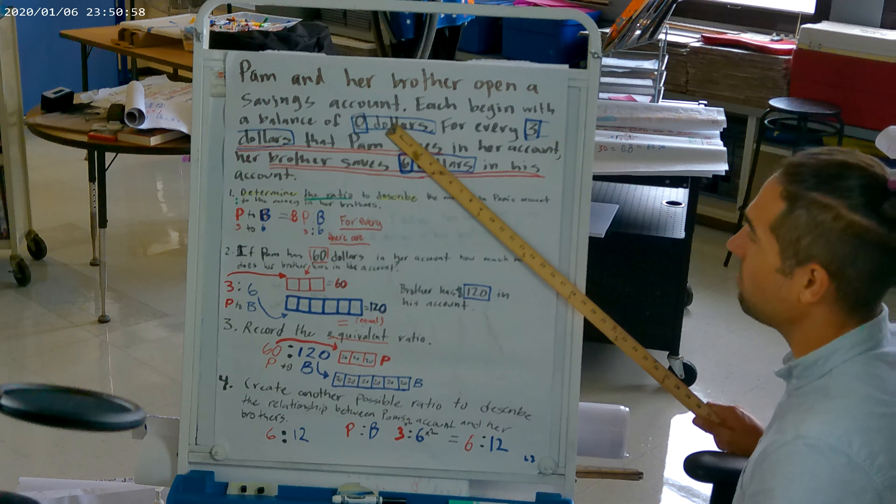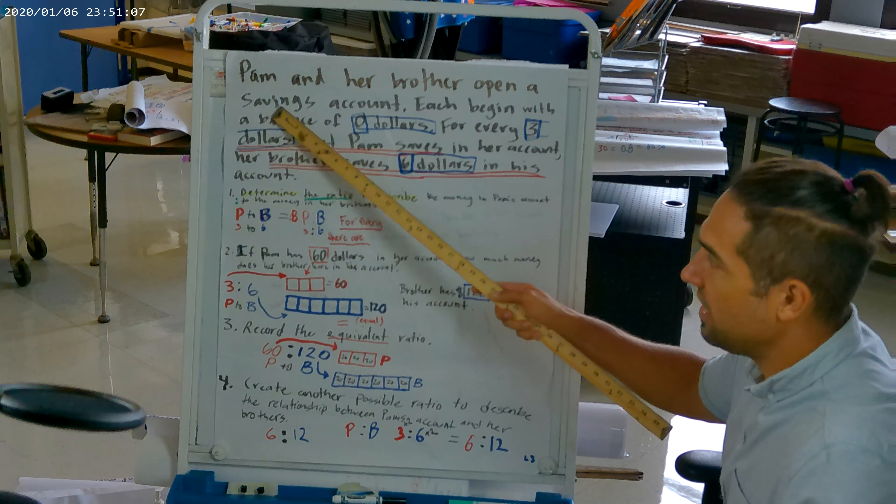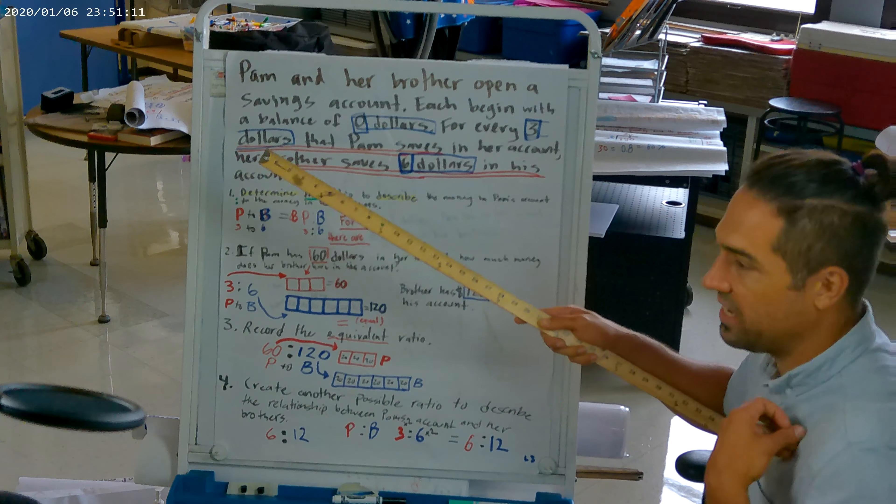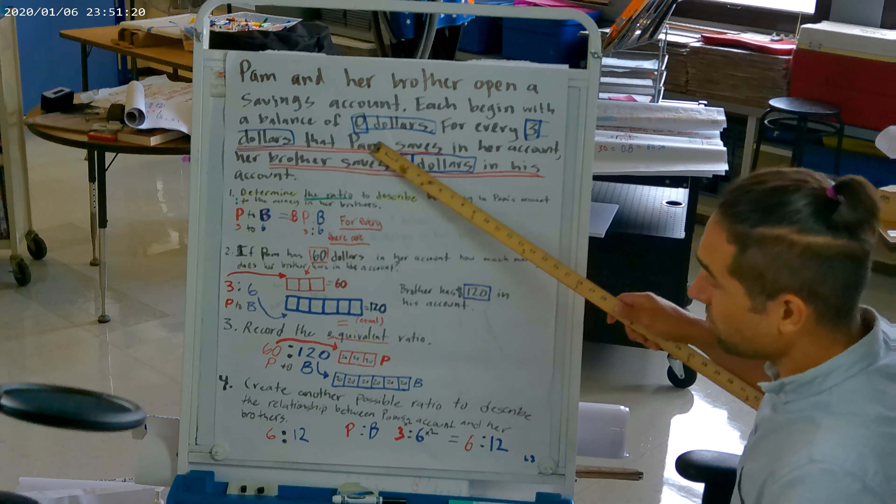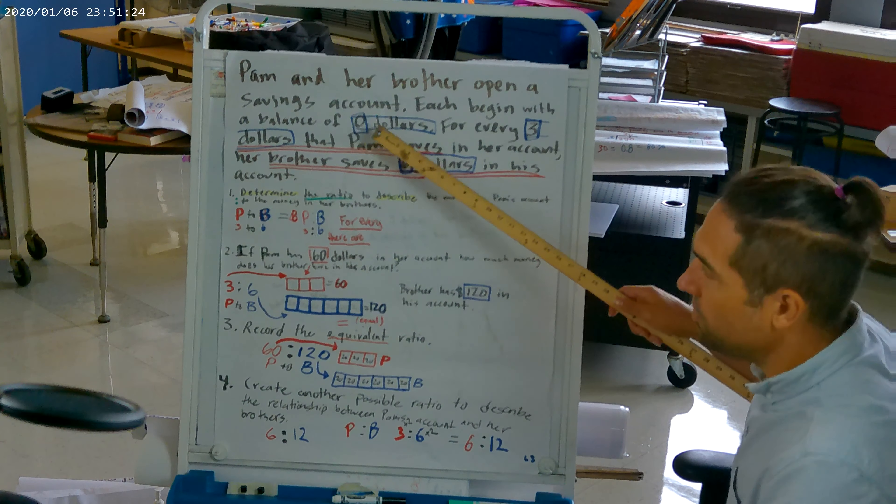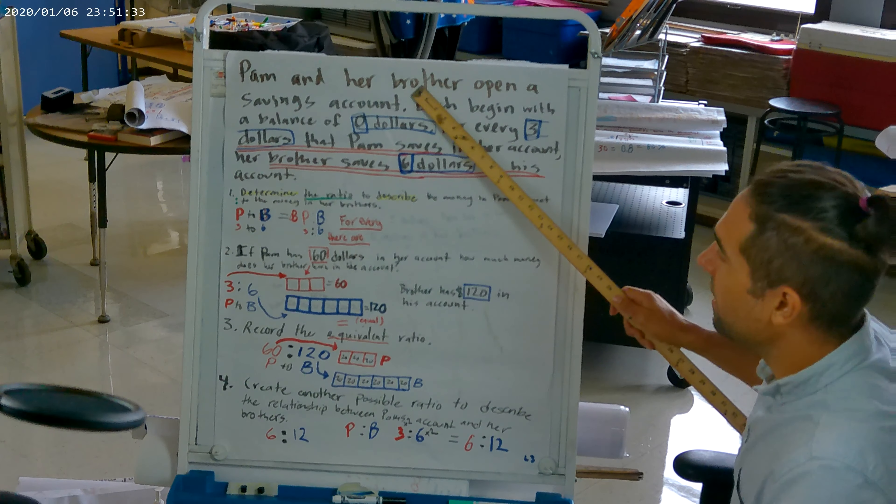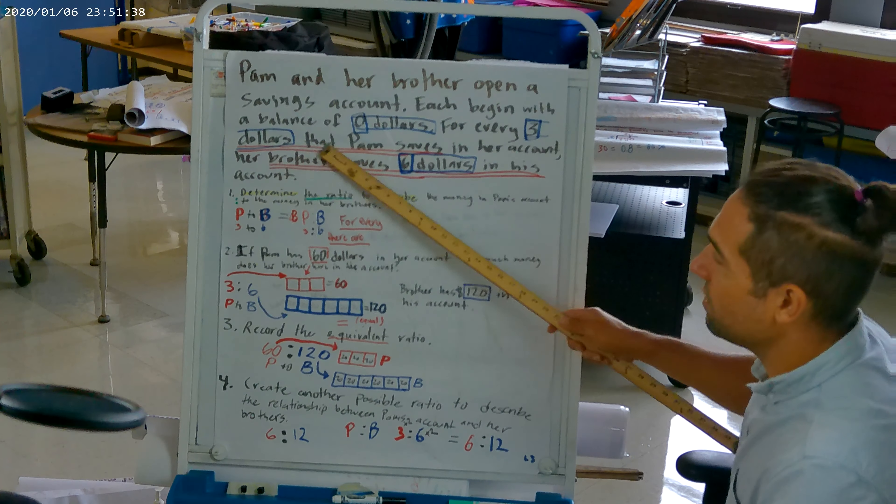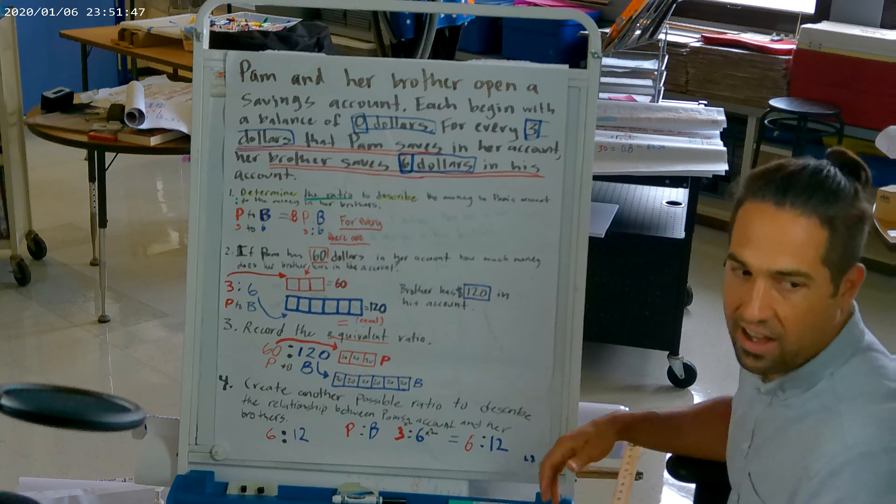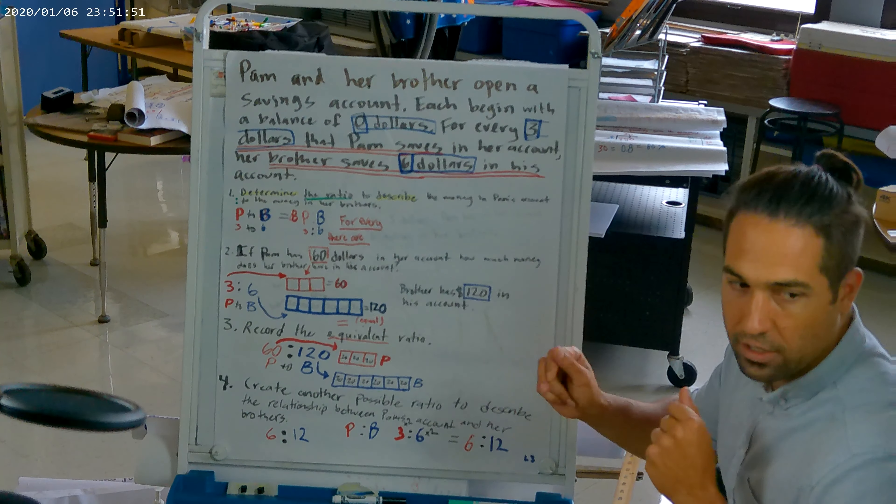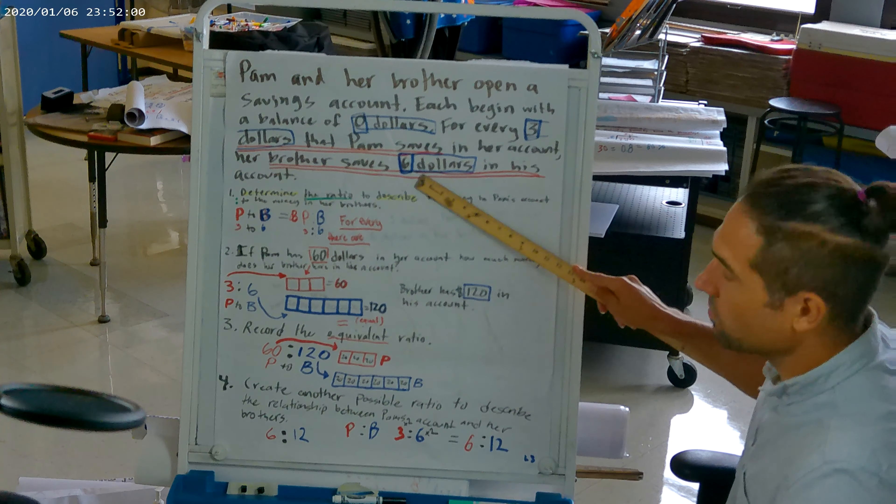We're going to start. Cam and her brother open a savings account. A savings account is where you put money into. Savings account is where you save money, it's an account that you put money into and you don't take money out. They open a savings account. Each begin with a balance of $0. So when they start off, it's 0 to 0. Pam has $0 in her account and her brother has $0 in his account. But for every $3 that Pam saves in her account, her brother saves $6 in his account.